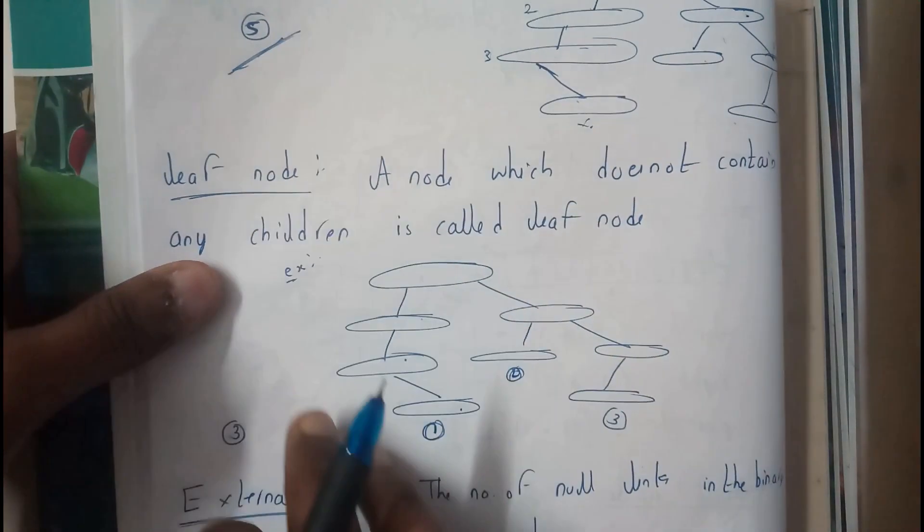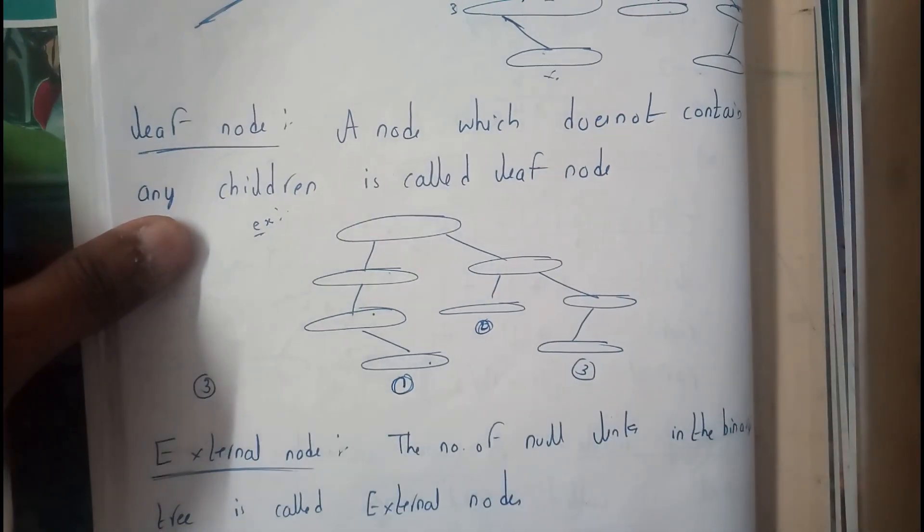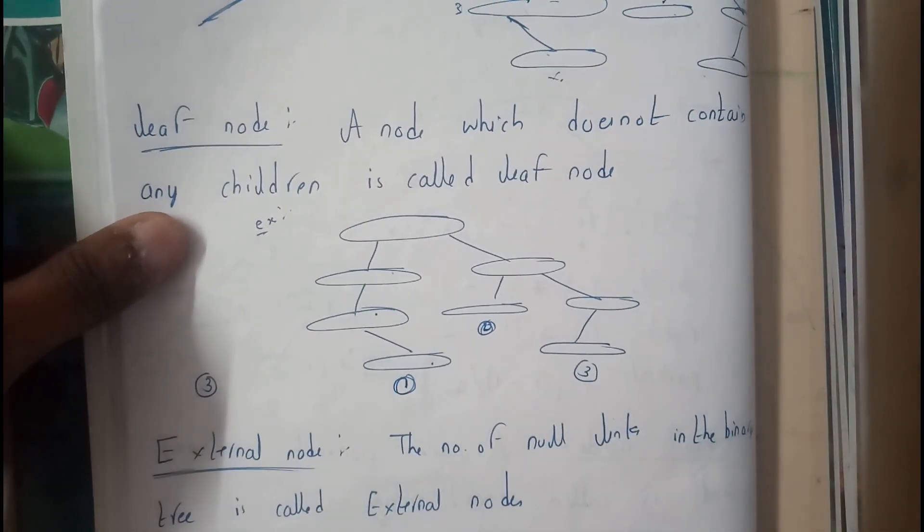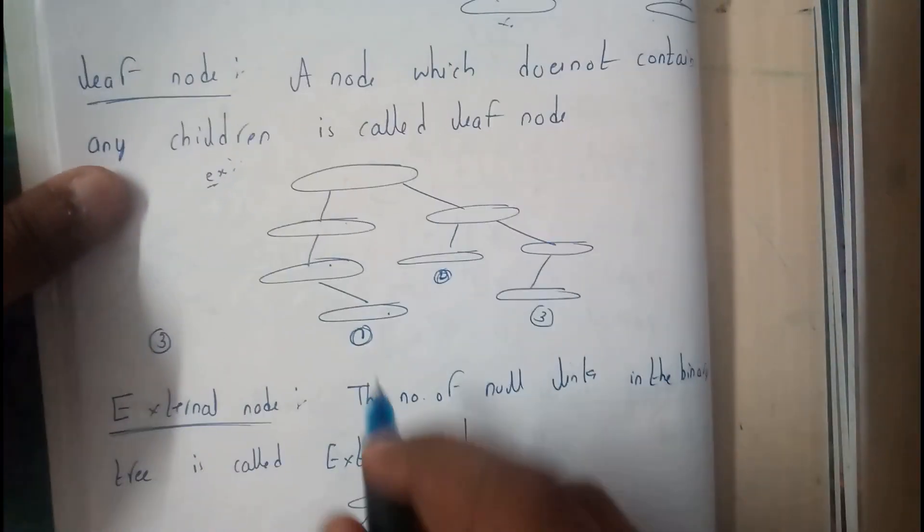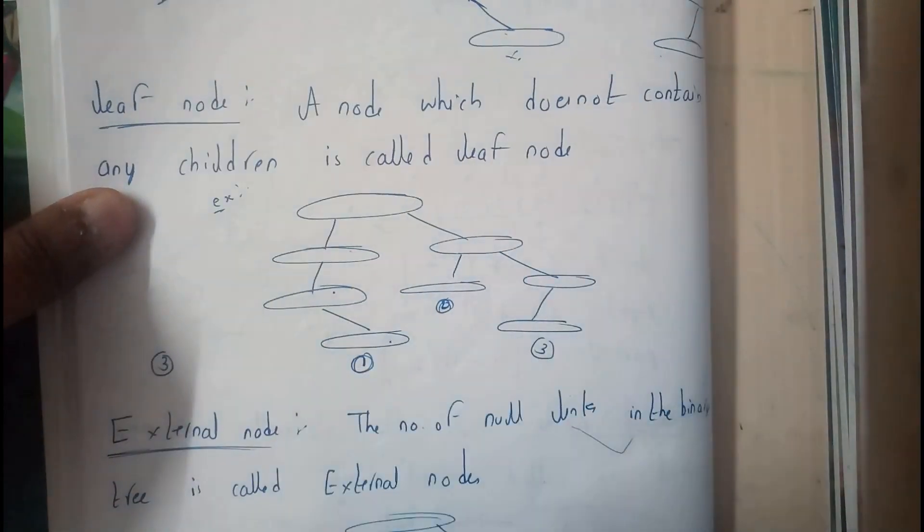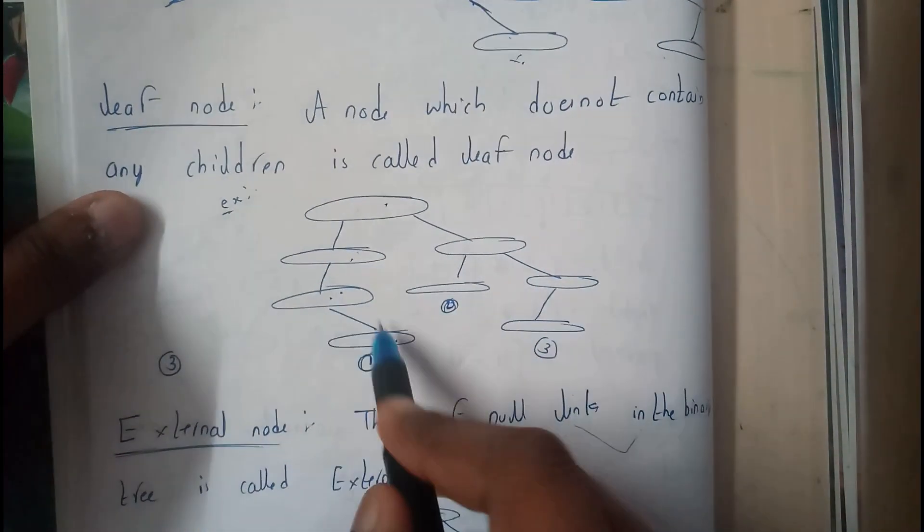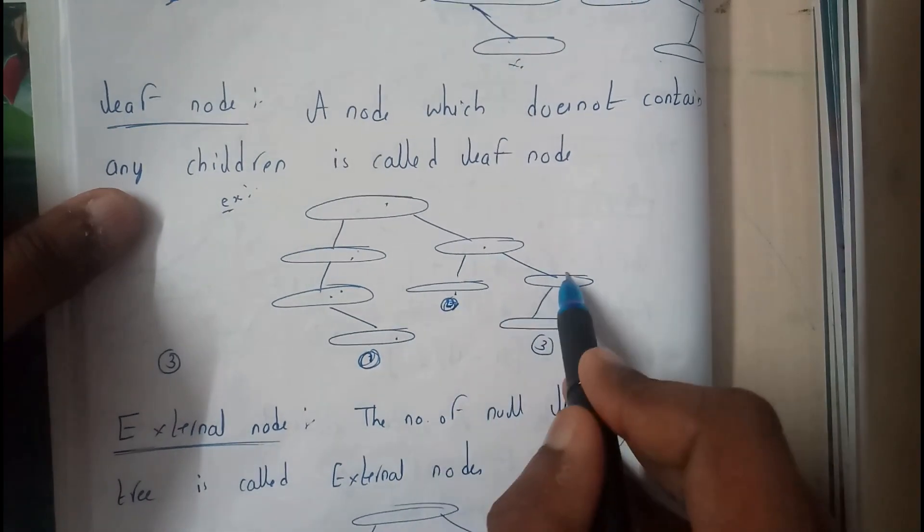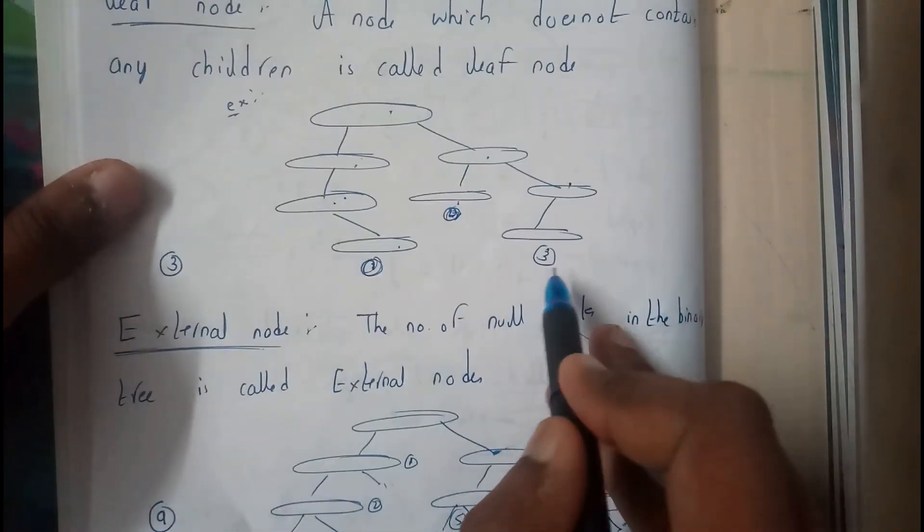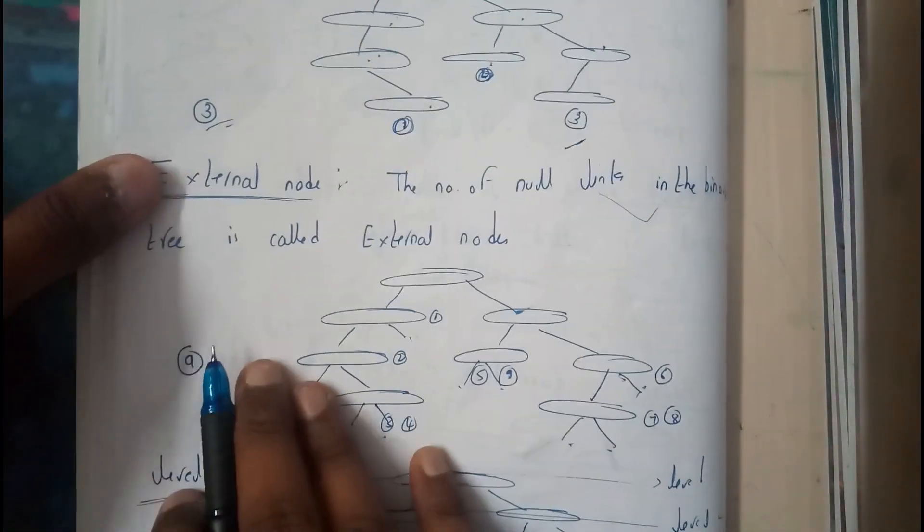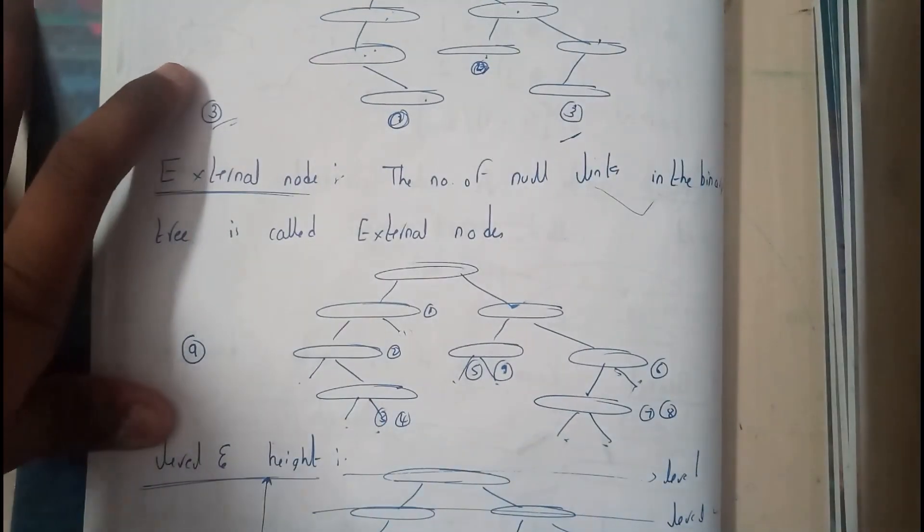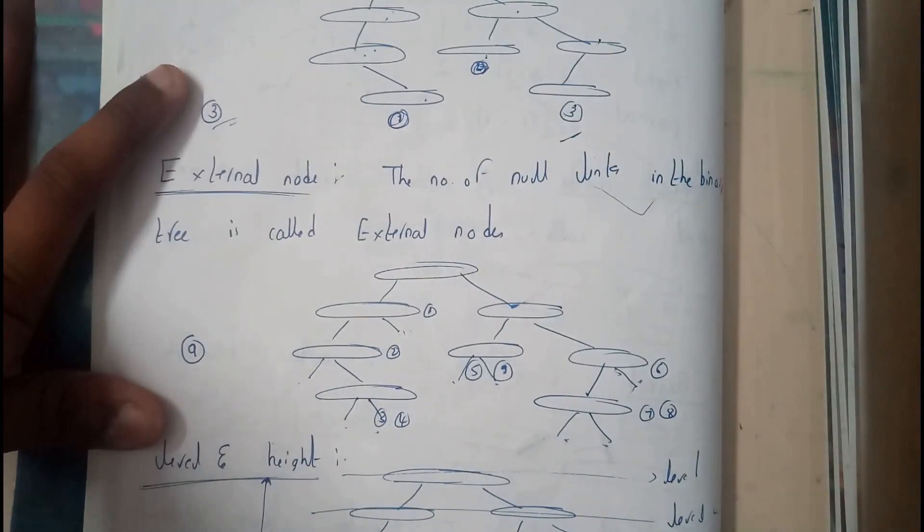Similarly, for leaf node. Leaf node is nothing but the number of nodes which do not have children. This is just opposite for this. So I have drawn the same diagram. So here we got children, we got children, we got children, we not got children one, we got children, we not got children two, we not got children three. So we got three here.